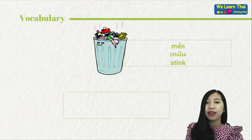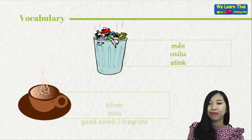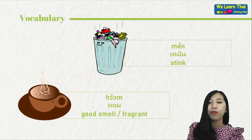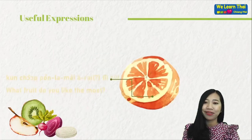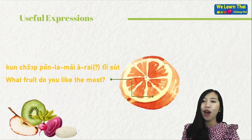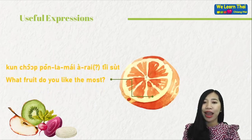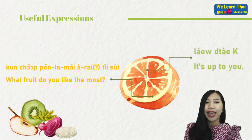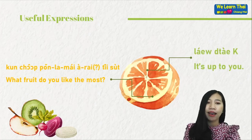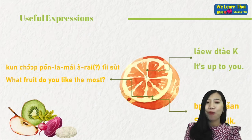มัน means stinky, หอม means fragrant. For useful expressions: คุณชอบผลไม้อะไรที่สุดคะ — What fruit do you like the most? แล้วแต่ค่ะ — It's up to you.